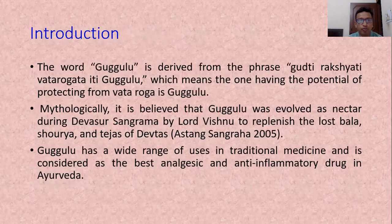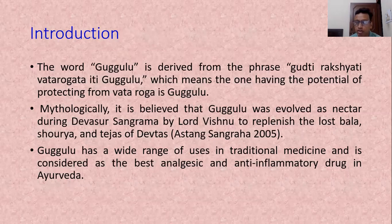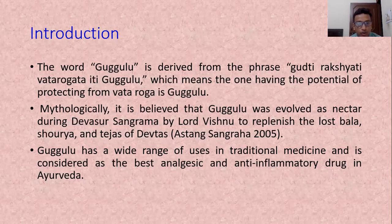The first one is Gugul. The word Gugul is derived from the phrase 'Gugulati Rakshati Vataroga Na Iti Gugulu,' which means the drug which has the potential to prevent the person from Vataroga is known as Gugul. Mythologically, it is believed that Gugul was derived as nectar during the Deva Asura Sangram by Lord Vishnu to recover the lost strength, Surya and Tejas of Devata. Gugul has a wide range of uses in traditional medicine and is considered one of the best analgesic and anti-inflammatory drugs in Ayurveda.